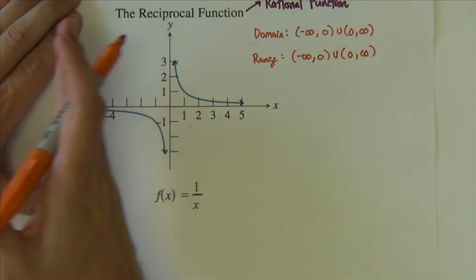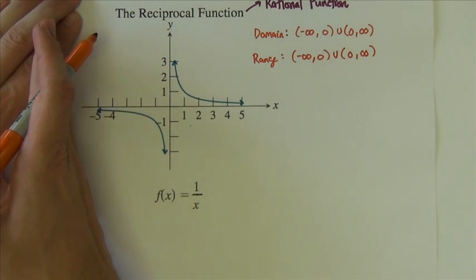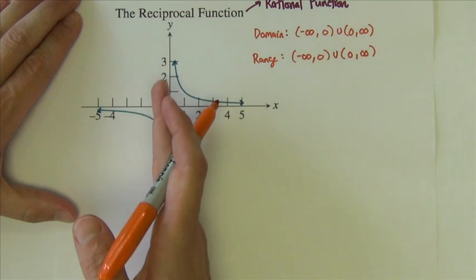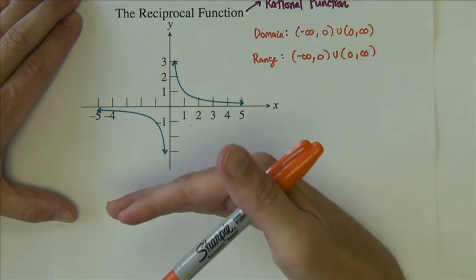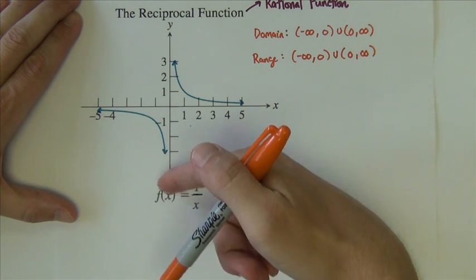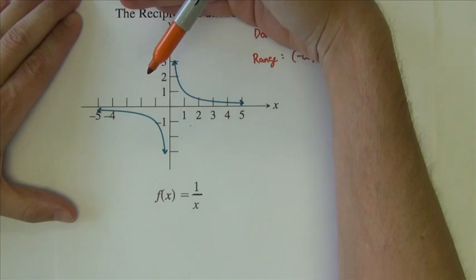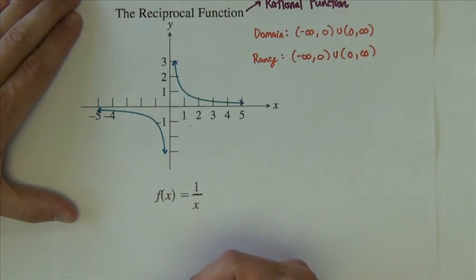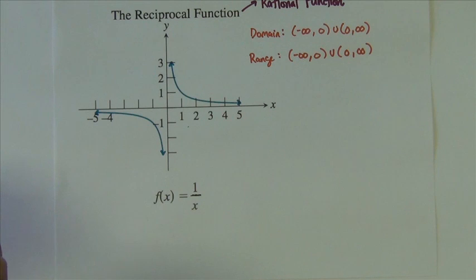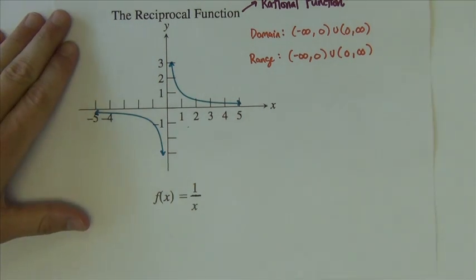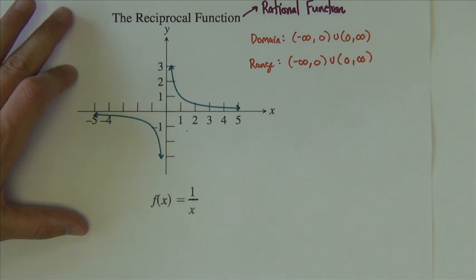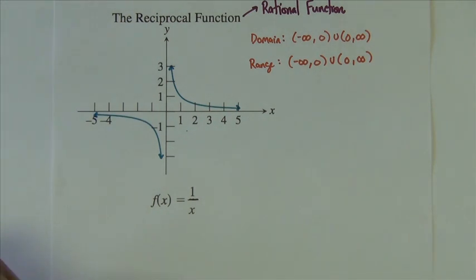In other words, the domain goes from left to right, negative infinity to infinity, but it skips zero right there in the middle. Same thing happens with the range. It comes from negative infinity as it goes down all the way up to positive infinity, but it skips zero right there in the middle. Now that domain and range is for this basic function. If the function were moved around, of course that would be different. It could be different.